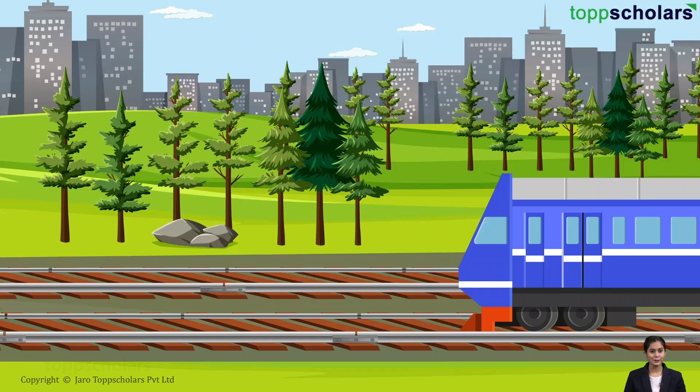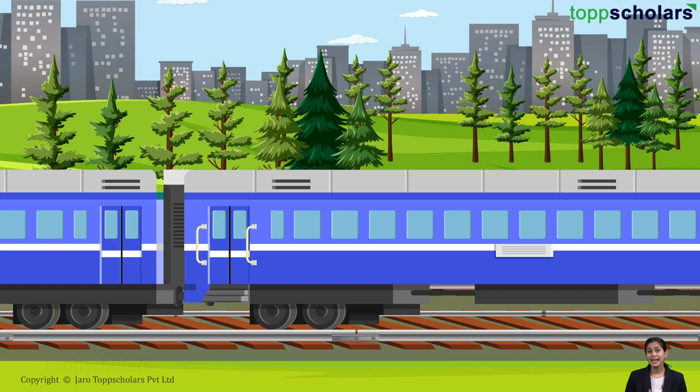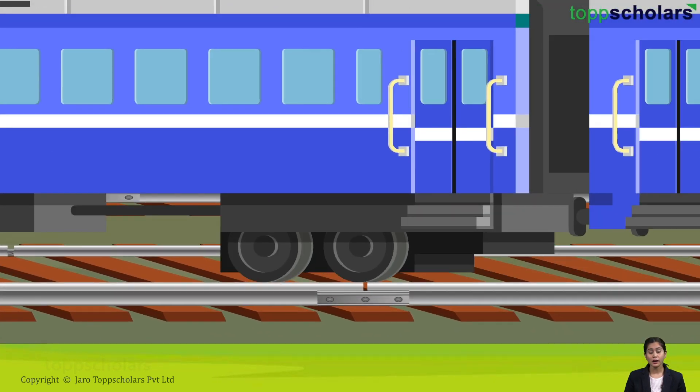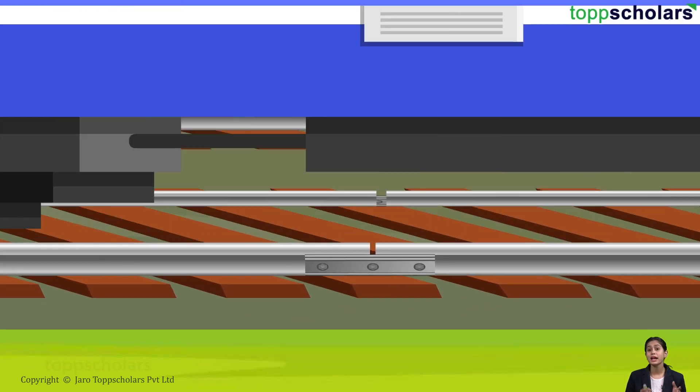Have you ever observed that while laying the railway track, a small gap is left between the adjacent rail? What do you think? What can be the reason behind this?